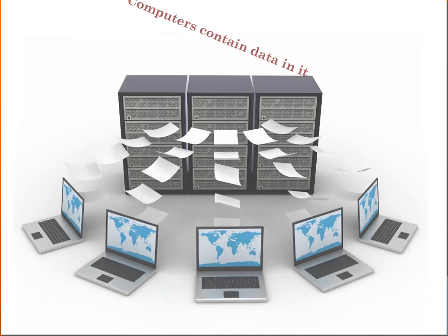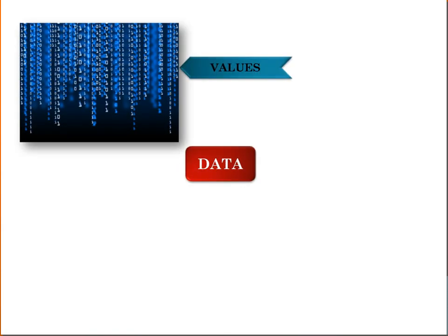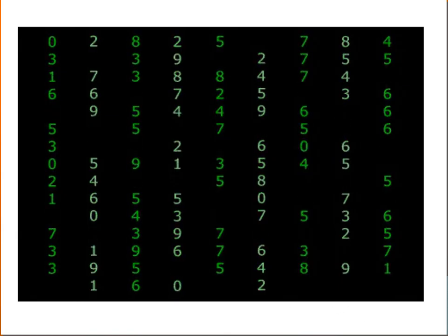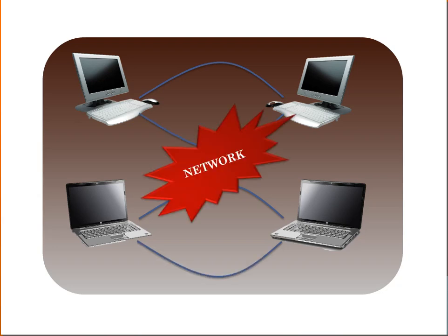The computers contain data. Data is a collection of facts such as values or measurements. It can be numbers, words, measurements, observations, or even just descriptions of things. When we want to share the data between two or more computers — called data communication — it is required to form a network between them.